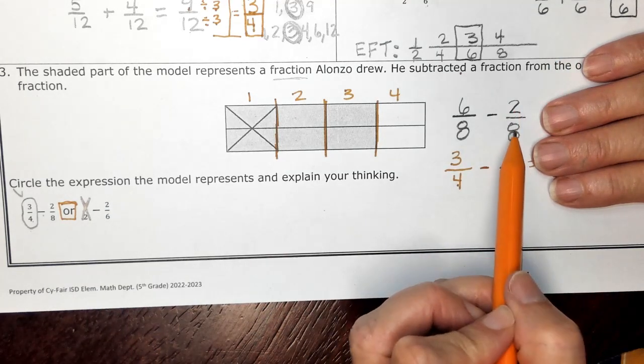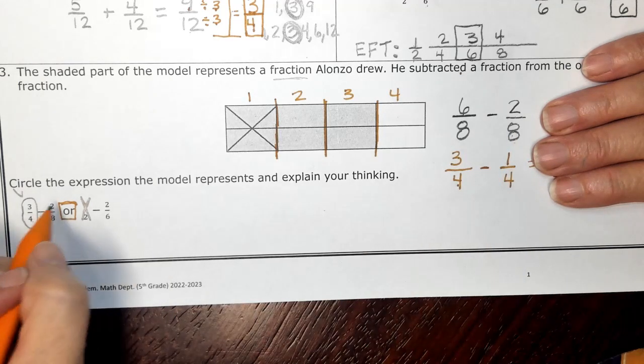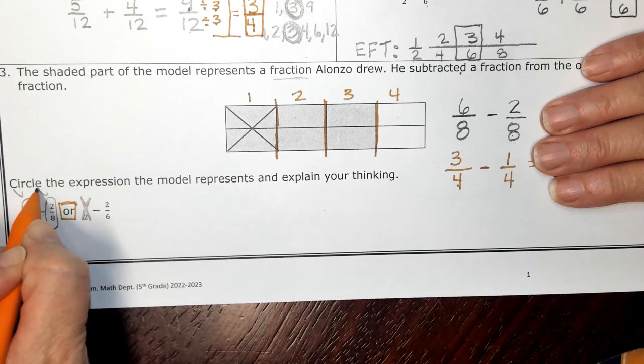So when I go back over to my model, I know that I have two eighths and we said another name might be one fourth, but we know one fourth can also be two eighths. So does that check out? That also checks out too.